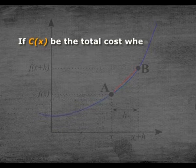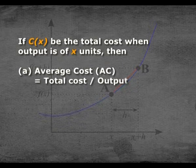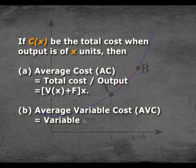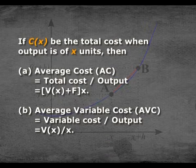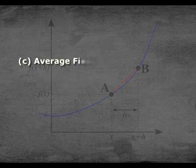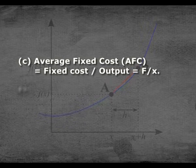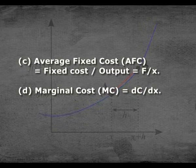If c(x) is the total cost when output is x units, then: average cost AC = c(x)/x = (v(x) + F)/x; average variable cost AVC = v(x)/x; average fixed cost AFC = F/x; and marginal cost MC = dc/dx, the first differentiation of cost.